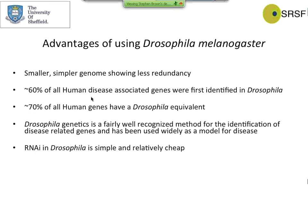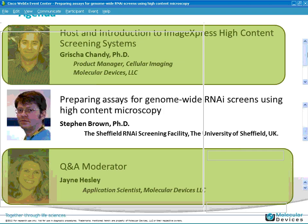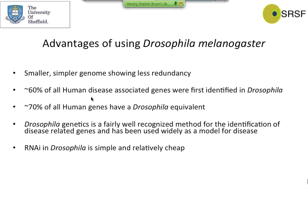Many people ask what the advantages of using Drosophila melanogaster as a model organism are. Primarily, there's over 100 years of genetic research associated with it — it's probably one of the best annotated genomes available, with many genes annotated by humans. The Drosophila genome is really quite robust in the way it's annotated, and you can find a lot of that information on Flybase.